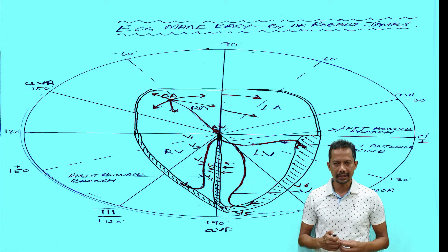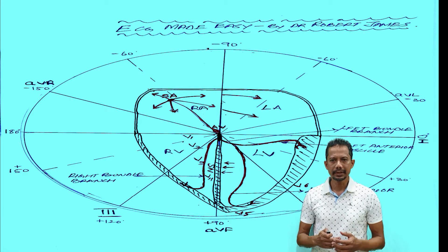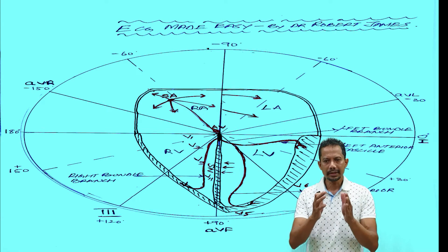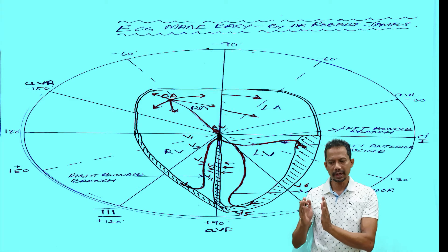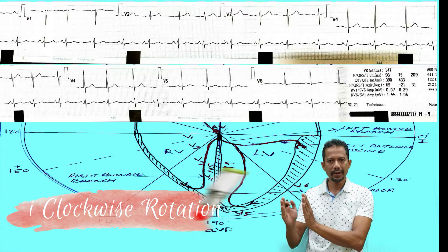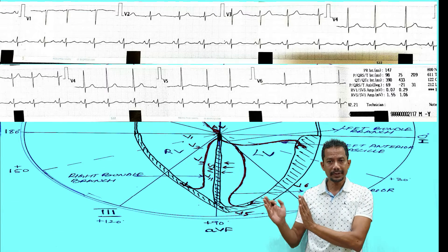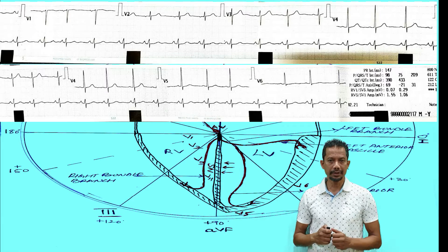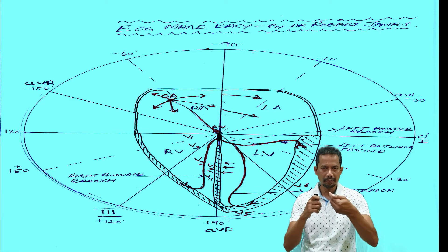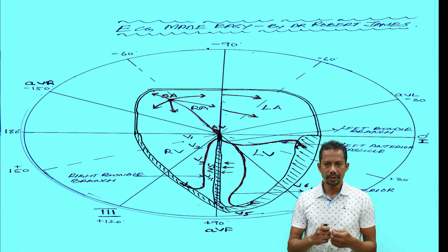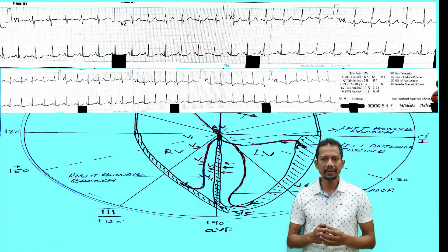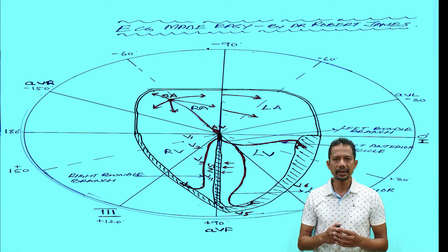In certain conditions like severe COPD you can get a transition zone after V4, so the transition zone will be shifted to between V4, V5 or sometimes even between V5, V6. That is called electrical rotation of the heart. If the transition zone moves towards between V2, V3 or V1, V2, that is called counterclockwise rotation, like in severe right ventricular hypertrophy.